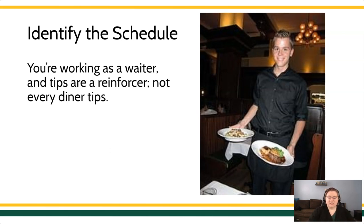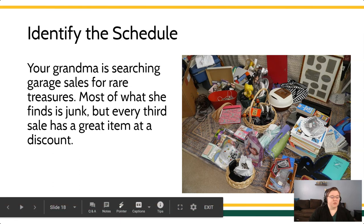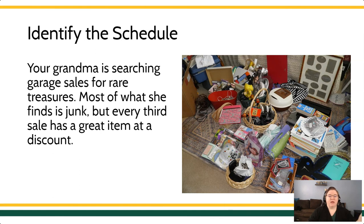What about this scenario? Your grandma is searching garage sales for real treasures. Most of what she finds is junk, but every third sale has a great item at a discount. The clue here is 'every third.' Attending the garage sales and searching around is the behavior, and every third garage sale has something she buys — very consistent, every time it's every third. So we're looking at a fixed ratio three schedule of reinforcement.